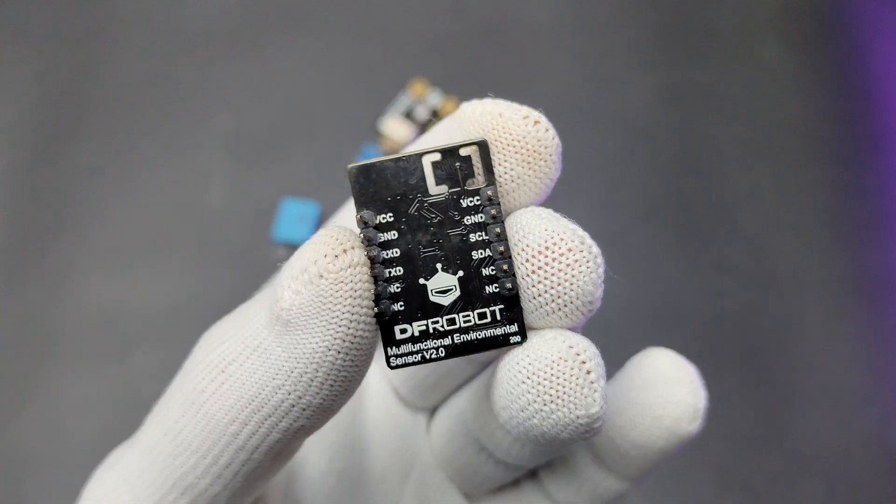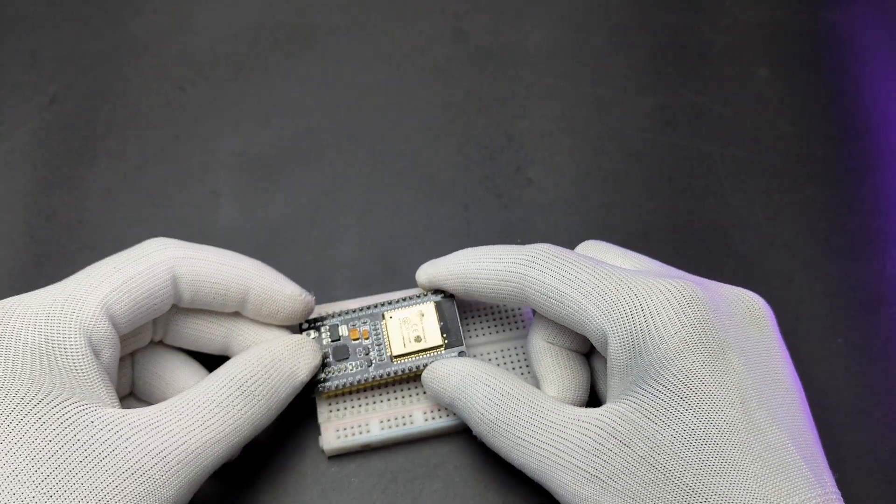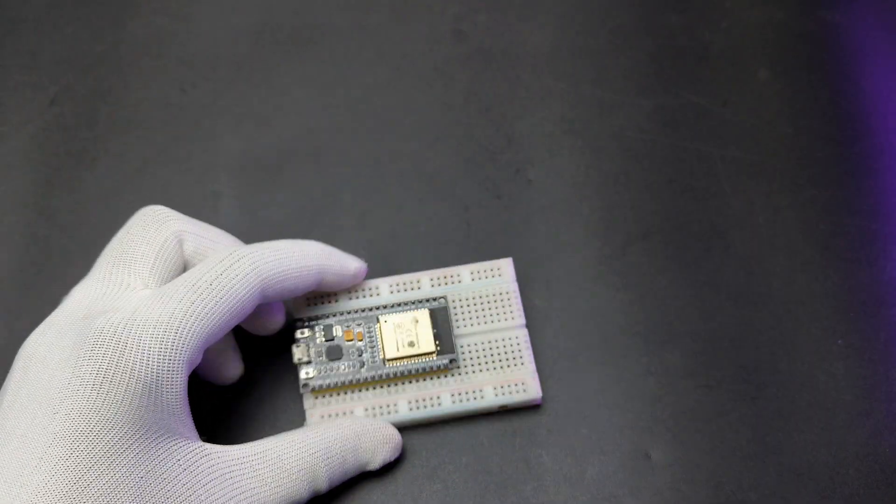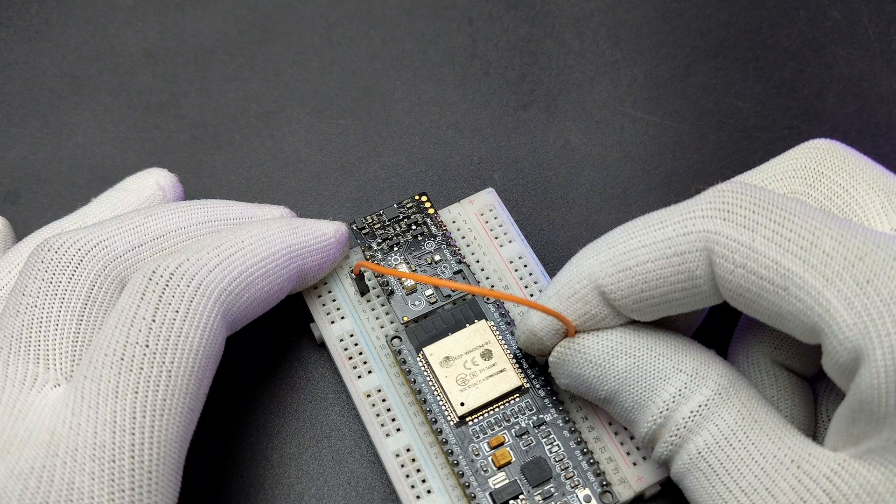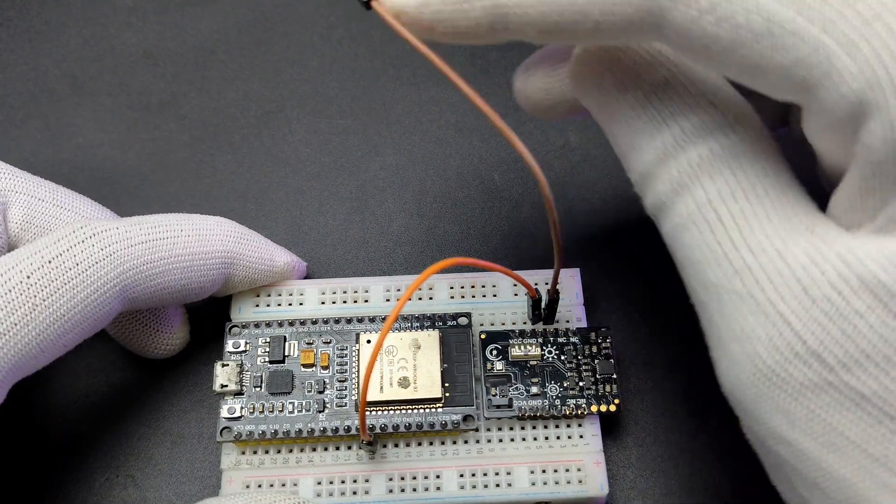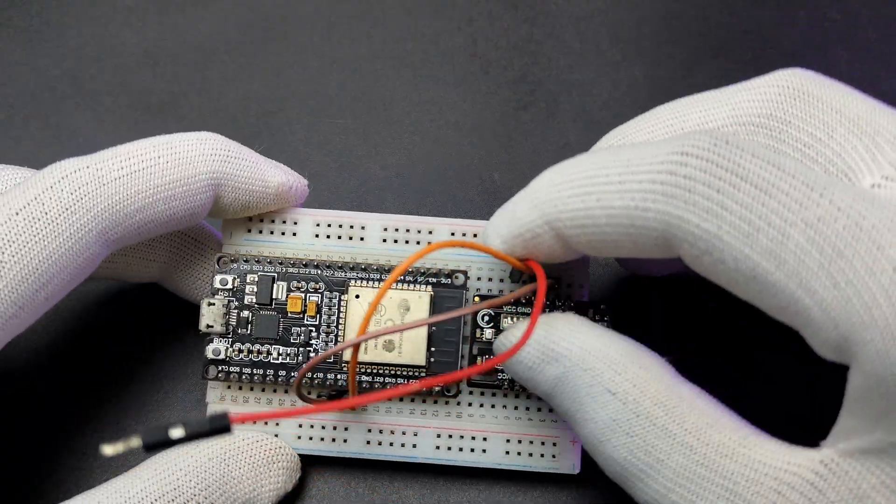Now let's connect this module to a microcontroller and test. Here I am using this ESP32 board. You can use Arduino also. I am using the serial communication here. So I connected the TX and RX pins to the GPIOs of ESP32. You can use any GPIOs because we are configuring the pins in the code. Then connect the VCC to 3.3V and GROUND to GROUND.